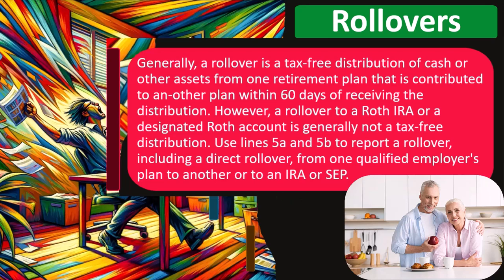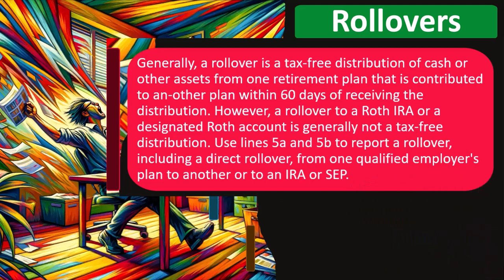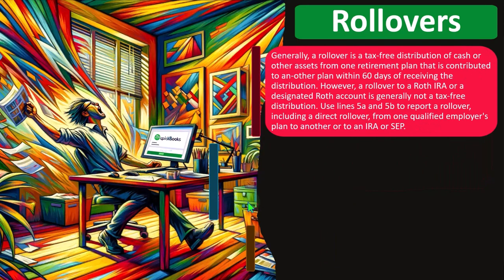A normal retirement plan is one where you get the benefit when you put the money in, and then when you take the money out, you're taxed on it at retirement. A Roth is reversed — you get taxed when you put the money in, it grows, and then you get the tax benefit when you take the money out. So converting from a Roth to a normal or a normal to a Roth is more complicated than rolling over from a normal retirement account to another normal retirement account. Use lines 5A and 5B to report a rollover, including a direct rollover from one qualified employer plan to another, or to an IRA or SEP.